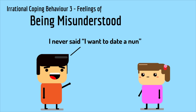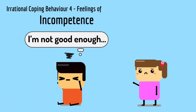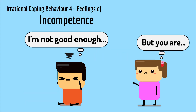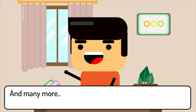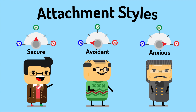"I didn't say I wanted to date a nun, I said I wanted to go for a run." Feelings of incompetence — "why can't you get it already?" — and many more. These feelings, invoked from our past traumas, get a lot more complicated when mixed with attachment styles.